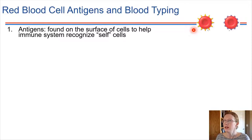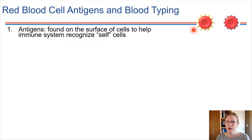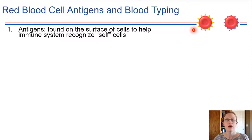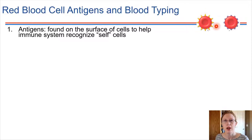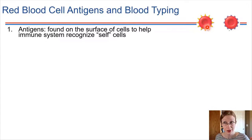Cells of the immune system, which we'll spend a chapter on a little bit later on, are always just kind of looking around in the body and checking to see if things are as they should be or if they are foreign. These carbohydrates are one of the things that the immune system can recognize — they see that and say, okay, that's a normal cell, it's one that's supposed to be here as part of this body. It's not foreign.